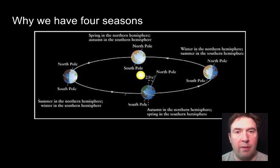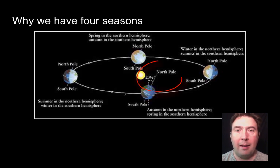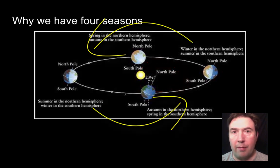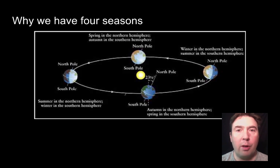Hopefully you paused the video and gave yourself 30 or so seconds to think about it. The biggest contributing factors that lead to the four seasons are the location of the Earth that we're looking at, the tilt of the Earth, and the rotation of the Earth around the sun. In this diagram, the sun — obviously not drawn to scale — is in the middle, and we show the location of the Earth in four positions corresponding to the four different seasons.